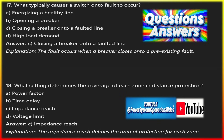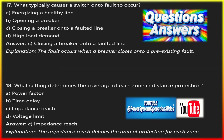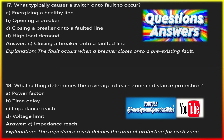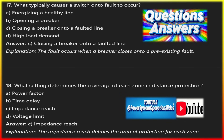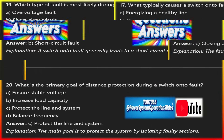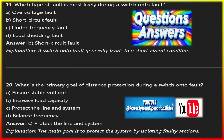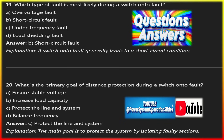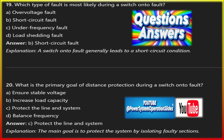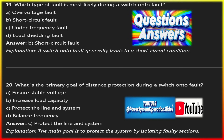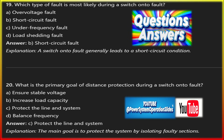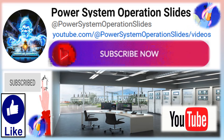The Switch-on-to-Fault (SOTF) function in the REL670 Line Distance Protection Relay is an essential mechanism for protecting power systems during breaker closing operations. It provides instantaneous detection and tripping when a breaker closes onto a faulted line, preventing prolonged fault currents that can damage equipment. Proper configuration of voltage and current thresholds, coordination with other protection schemes, and discrimination between fault and inrush conditions are critical for reliable SOTF operation. The REL670's flexibility and advanced logic make it suitable for a wide range of power system applications, from transmission lines to substations.